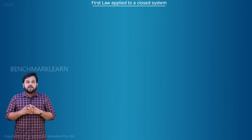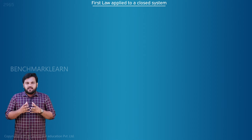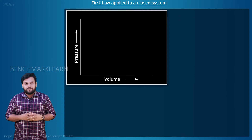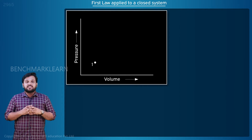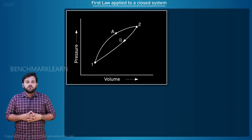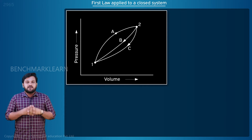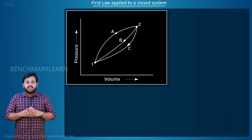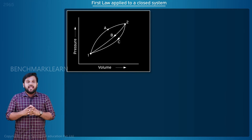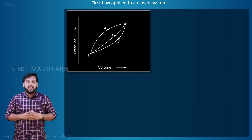First law applied to a closed system. Consider a process occurring in a closed system as shown in the pressure-volume graph. The closed system changes its state from state 1 to state 2 along path A. Then the system returns to its original state 1 along path B or path C. As the system returns to its initial state, the system is said to have undergone a thermodynamic cycle. Here we have two cycles: 1A2B1 and 1A2C1.